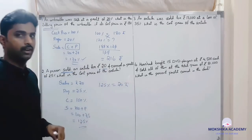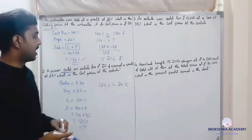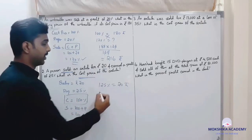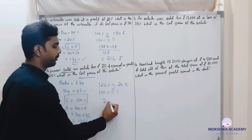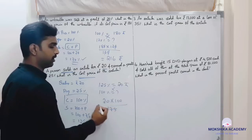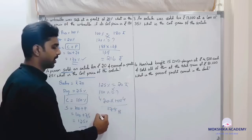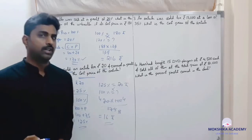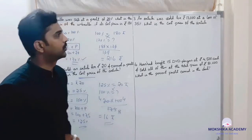Cost price is still 100 percent. So 100 percent equals question mark. Multiply 20 into 100 divided by 125. 25 fives are 25, fours are 100 — simplifying gives 60. So the cost price is rupees 60.